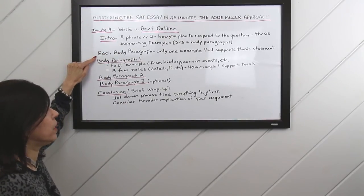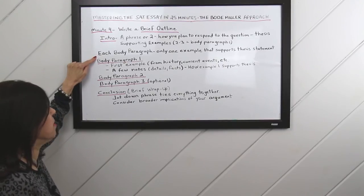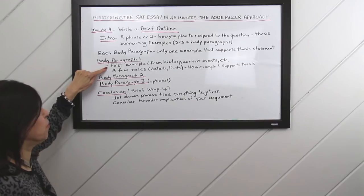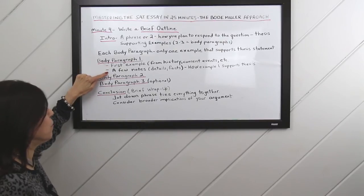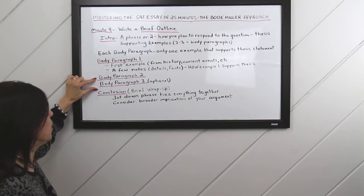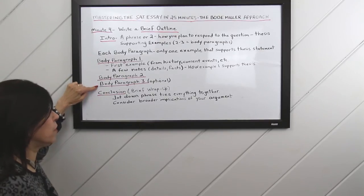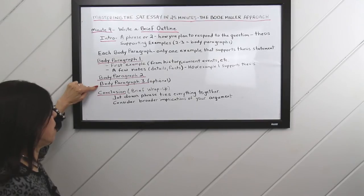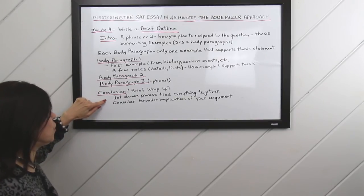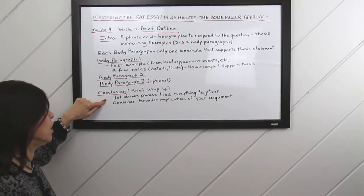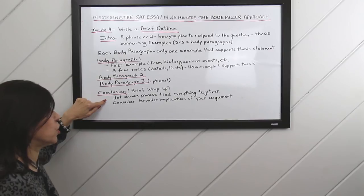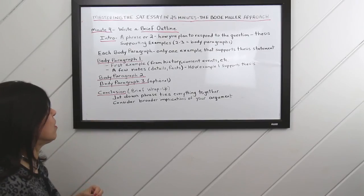Each body paragraph should only have one example that supports the thesis statement. So body paragraph one is going to be your first example from history, current events, personal observations, whatever you decide, with a few notes on how example one supports your thesis. Body paragraph two and three are exactly the same, each with their own example. Body paragraph three is optional if you don't have enough time. And in your conclusion, you're just going to jot down a phrase you might want to use that ties everything together. You might want to consider a broader implication or larger context for your argument. This should only take a minute. So it's just jotting down some notes.